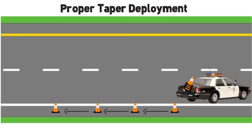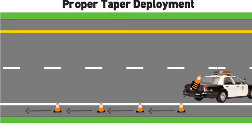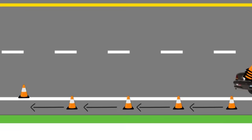When the last cone has been placed on the edge line, the responder begins walking backwards until the next cone is reached. The responder takes one lateral step into the travel lane and places the cone, immediately returning to the shoulder facing traffic.